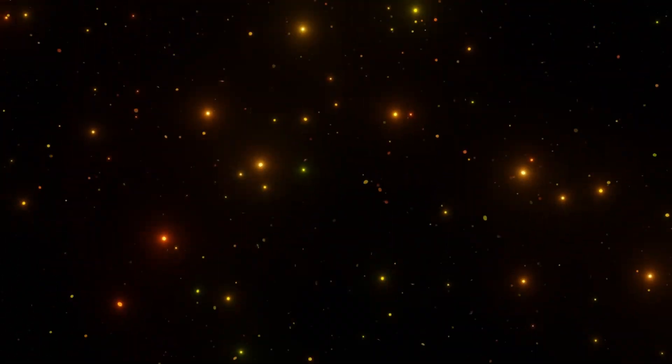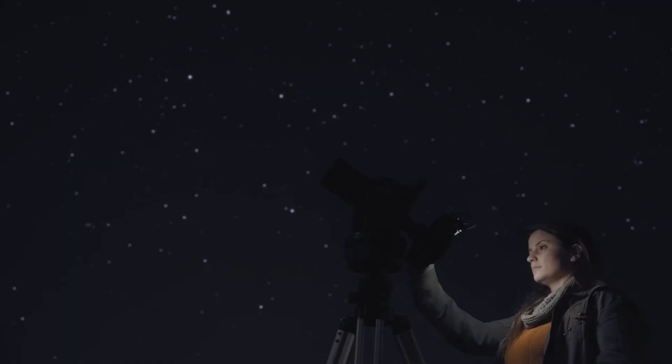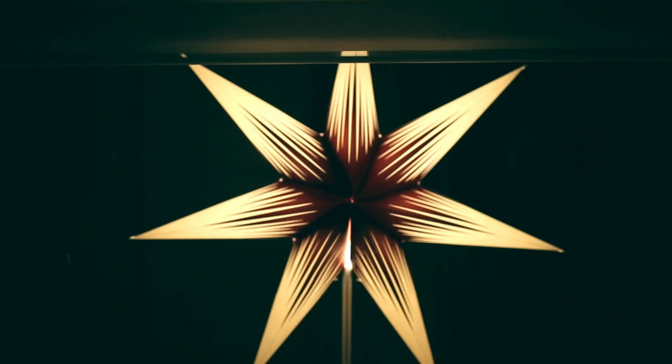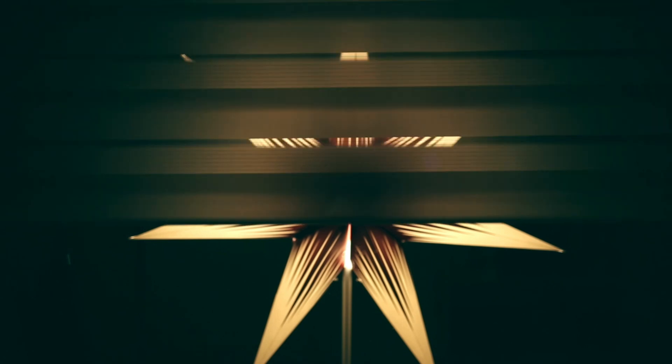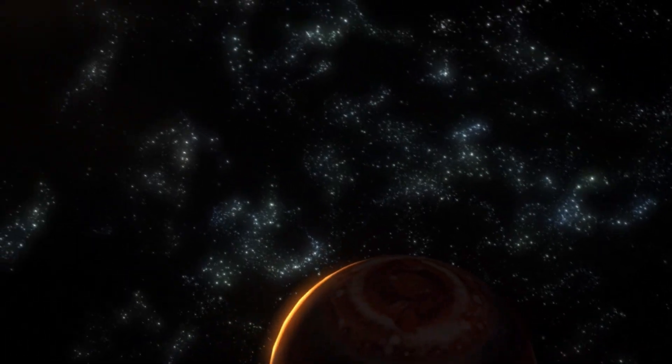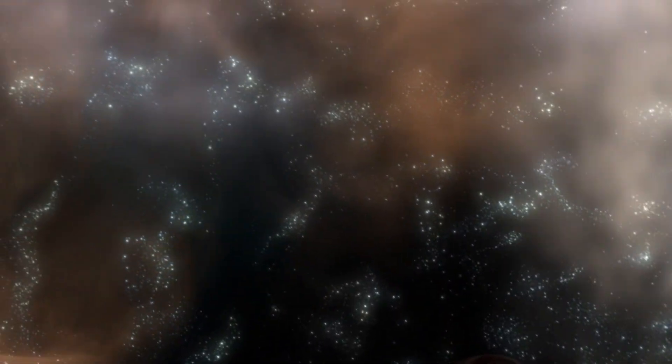To understand this stellar lineup, let's rewind to the universe's early days after the Big Bang. Imagine a cosmic kitchen filled mostly with hydrogen and helium, like the universe's basic ingredients, about 92% hydrogen and 8% helium. Or if we weigh them, roughly 75% hydrogen and 25% helium.